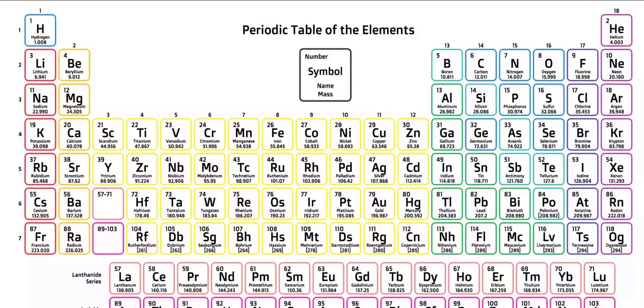We also know that in neutral atoms the number of electrons will equal the number of protons. So, for example, a neutral atom of hydrogen will have one proton and one electron. Helium has two protons, and therefore two electrons.